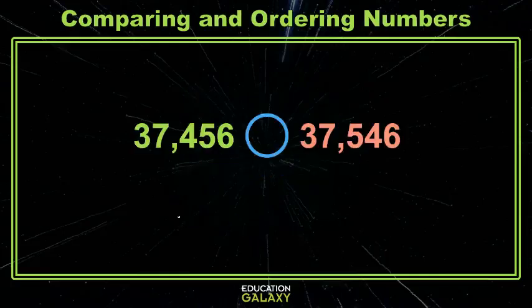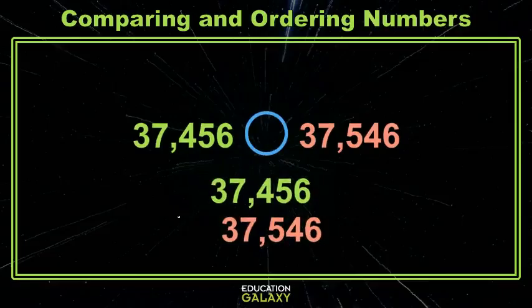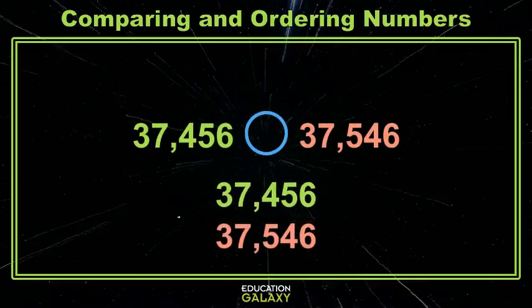Look at these beautiful numbers. How do we compare these? We want to compare using place value. Maybe you'd like to look at your place value lined up. We start with the leftmost place value — in this case, it's the ten thousands.